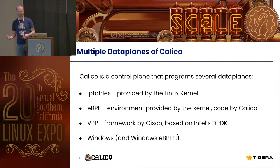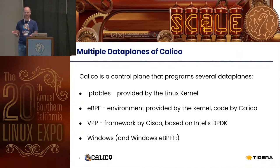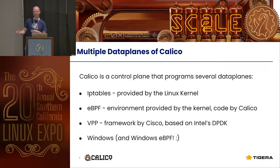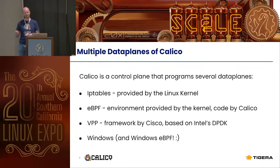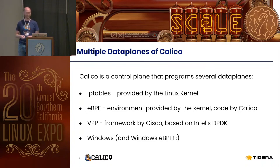I will be focusing today mostly on the eBPF data plane, which executes in the kernel, but the kernel only provides the environment — the code and the data plane itself is provided by Project Calico. We also support a couple more data planes. Cisco contributed VPP, the vector packet processing framework based on Intel's user space DPDK toolkit. We also run in a Windows environment, so if you have a cluster with Windows nodes, Calico can run there and implement policies. Windows is experimenting with eBPF which is compatible with Linux eBPF, and we experiment with that as well.